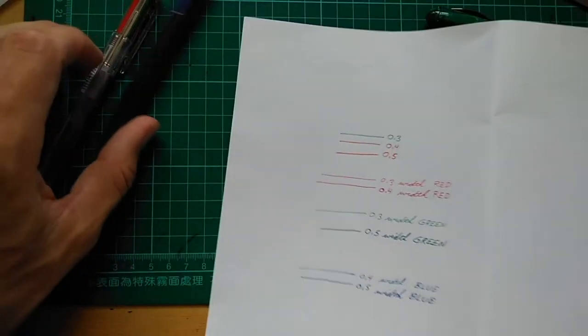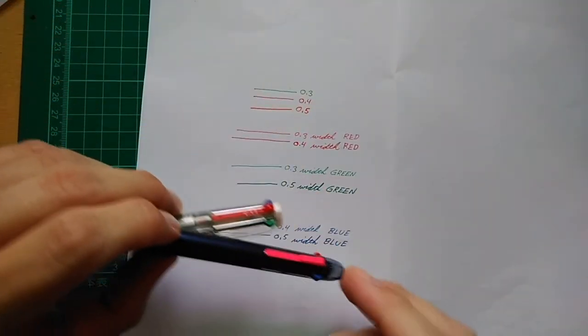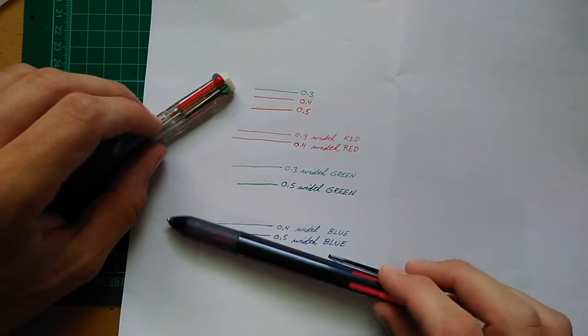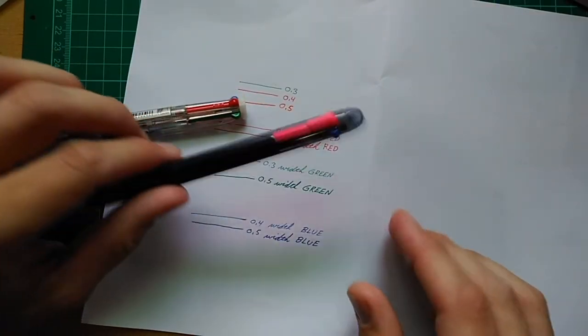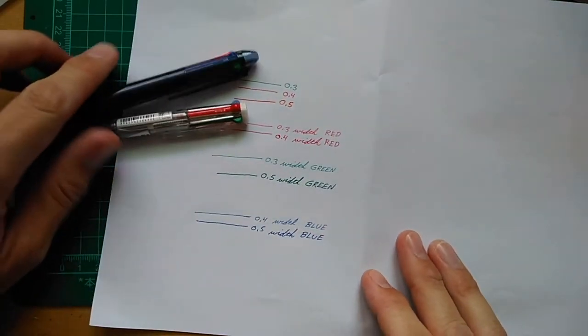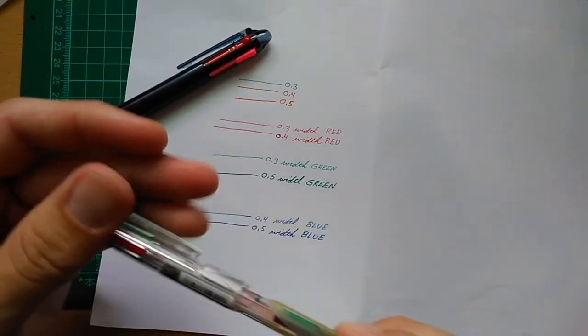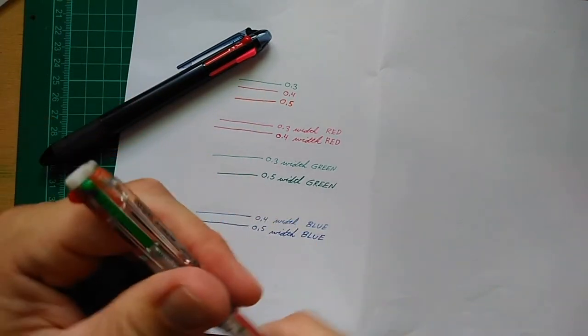Perhaps this ink can be engineered to flow well with a .7 tip in a slim cartridge like this, I'm not sure. I do know that a .7 millimeter would disappear rather quickly. That's another minor drawback to these pens.